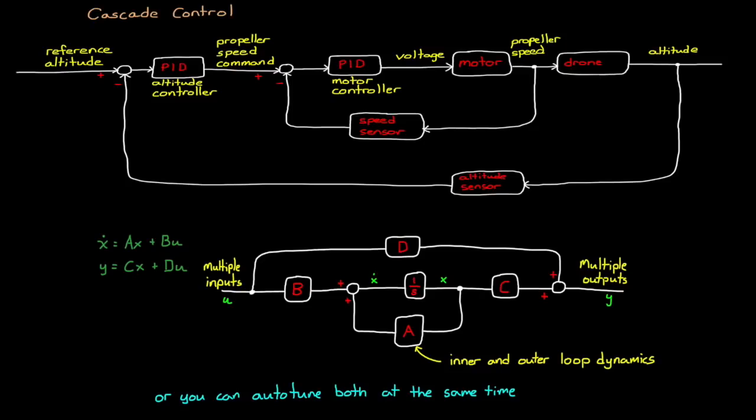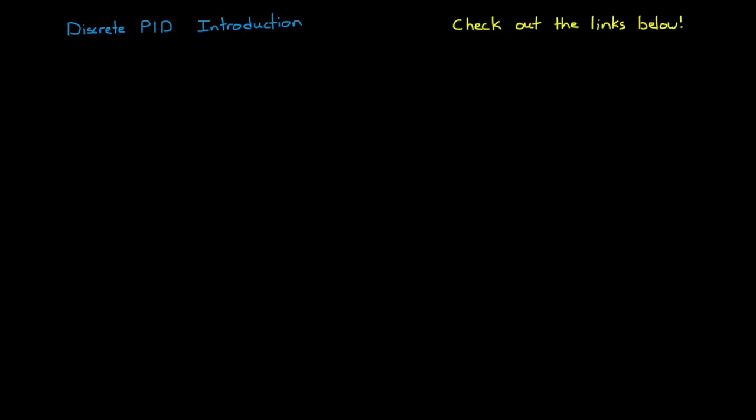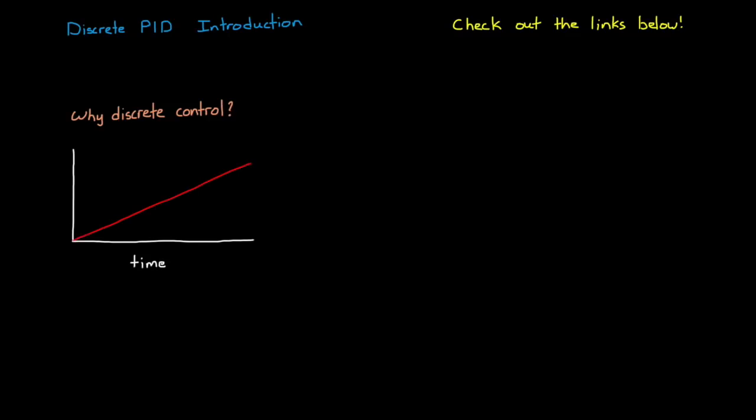There's obviously a lot more that could be covered on cascaded loops, but I want to turn your attention to a topic that will affect almost every PID controller you create: a discrete PID controller. Similar to cascaded loops, I want to use this as an opportunity to introduce the topic and give just enough information to explain why learning it is important and how a discrete PID controller differs from a continuous PID controller. Links to more information are below, including a series of videos on discrete control on my channel.